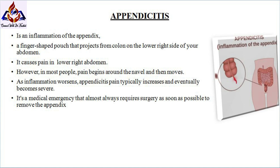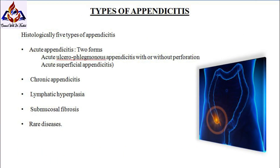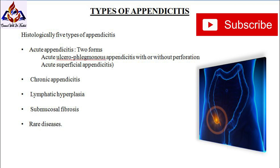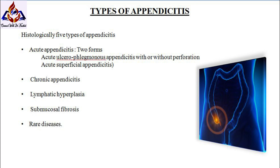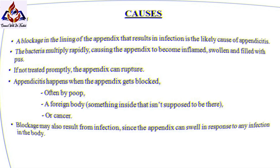Appendicitis is a medical emergency that almost always requires surgery as soon as possible to remove the appendix. Histologically, five types of appendicitis were differentiated: first, acute appendicitis in two forms — acute ulcerophlegmonous appendicitis with or without perforation, and acute superficial appendicitis; second, chronic appendicitis; third, lymphatic hyperplasia; fourth, submucous fibrosis; fifth, rare diseases.